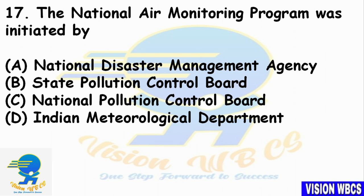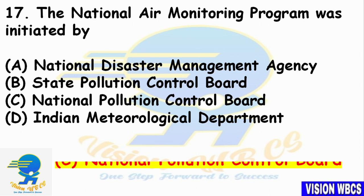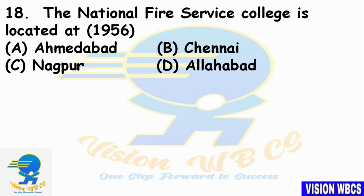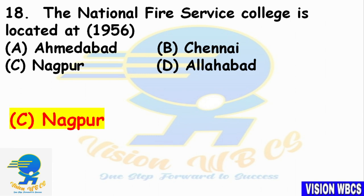Question 17: The National Air Monitoring Program was initiated by which organization? Option A — Ahmedabad. Option B — Chennai. Option C — Nagpur. Option D — Allahabad. The right answer is Option C: Nagpur — the National Fire Service College, Nagpur, was established in 1956.